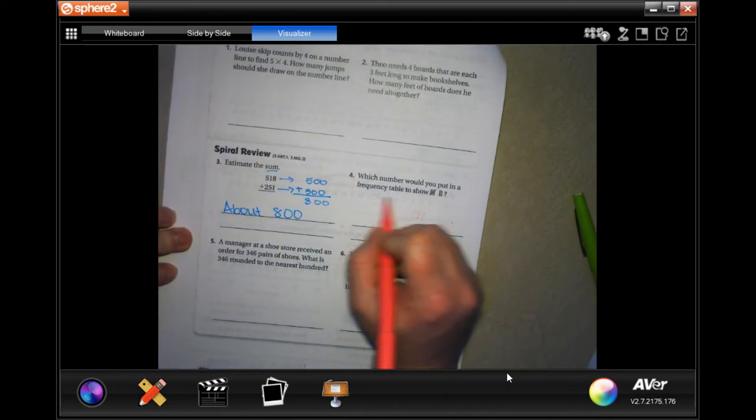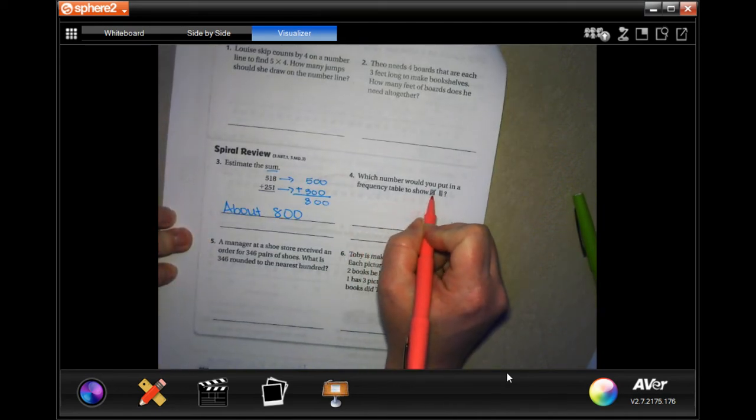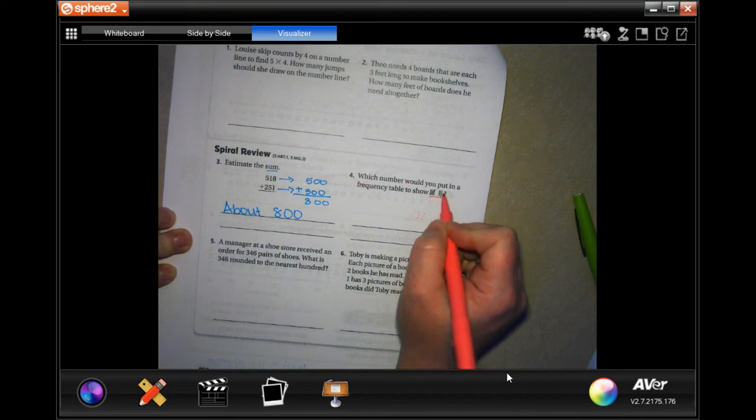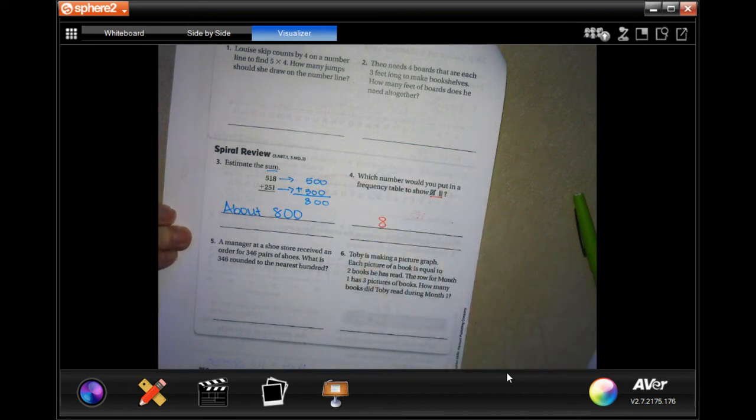Which number would you put in a frequency table to show this? Well, when you have four down and one diagonal, that's automatically five, and then there's three more. So 5 plus 3 is 8.